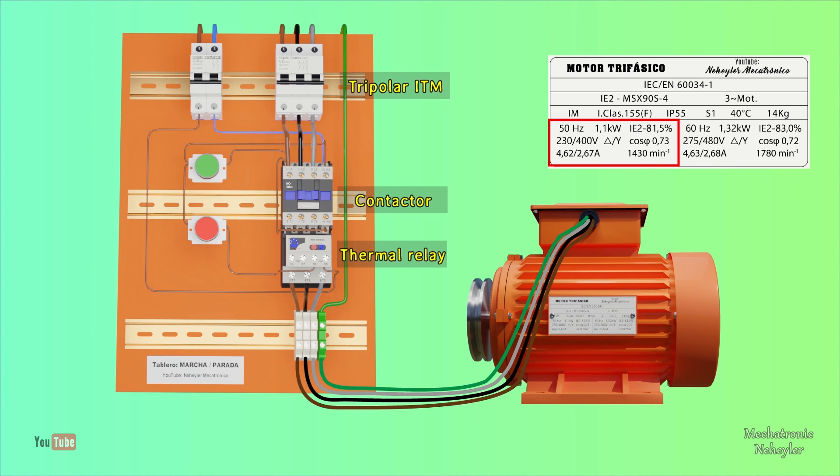For the control circuit, you can safely use 16-gauge wire and a 10-amp bipolar ITM. The explanation of each of these elements had already been made in previous videos, which I will leave here at the end so that you can review it.